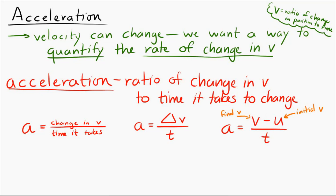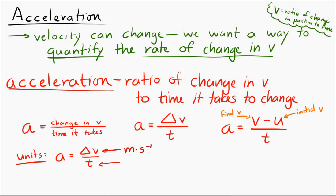From this equation we can get the units. On top we have velocity, which has units of meters per second. On the bottom we have time, in seconds. So we end up with meters per second per second, or meters per second squared. The unit of acceleration is meters per second squared.